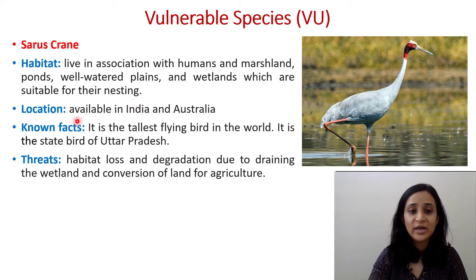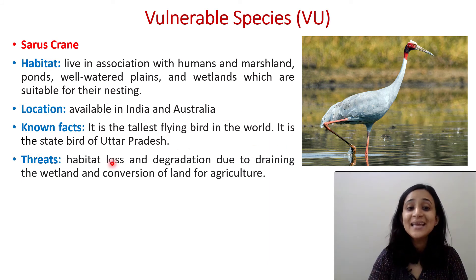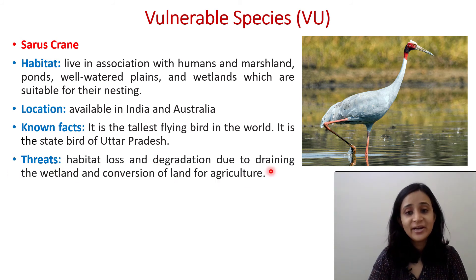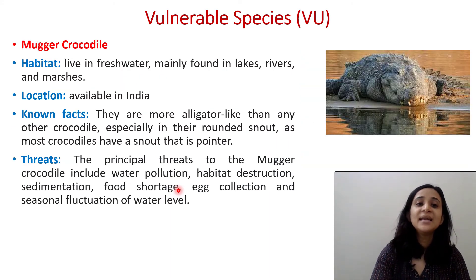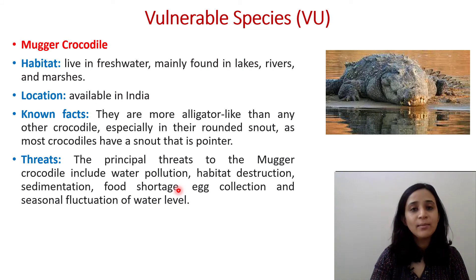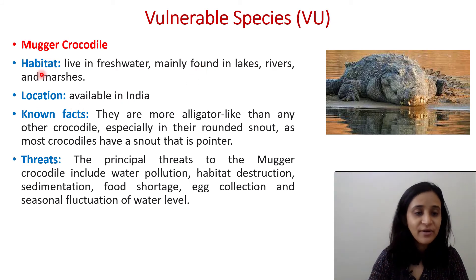The next Vulnerable species is the Sarus Crane. Its habitat is in association with humans, in marshland ponds, well-watered plains, and wetlands suitable for nesting, located in India and Australia. It is the tallest flying bird in the world and the state bird of Uttar Pradesh. Threats include habitat loss and degradation due to draining of wetlands and conversion of land for agriculture.